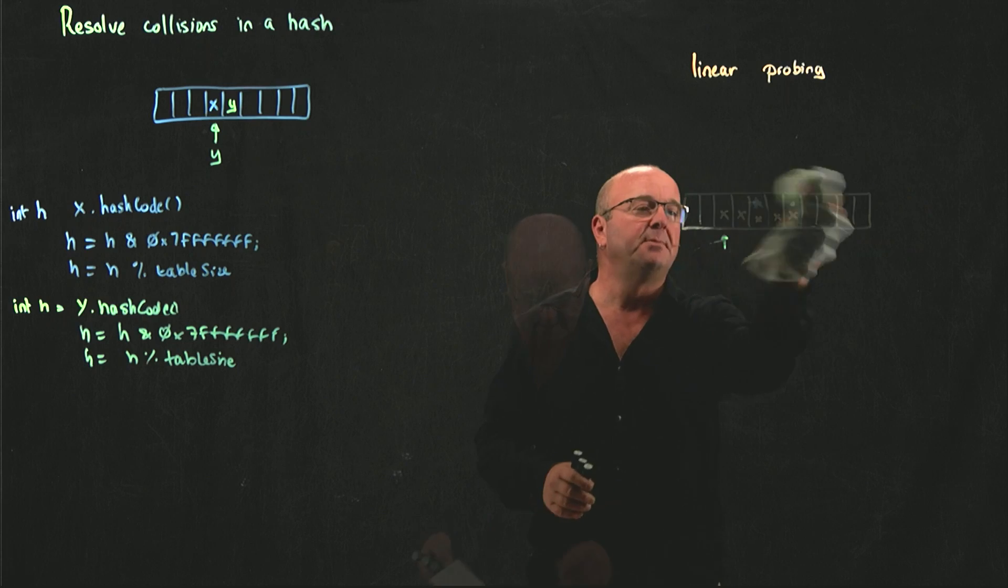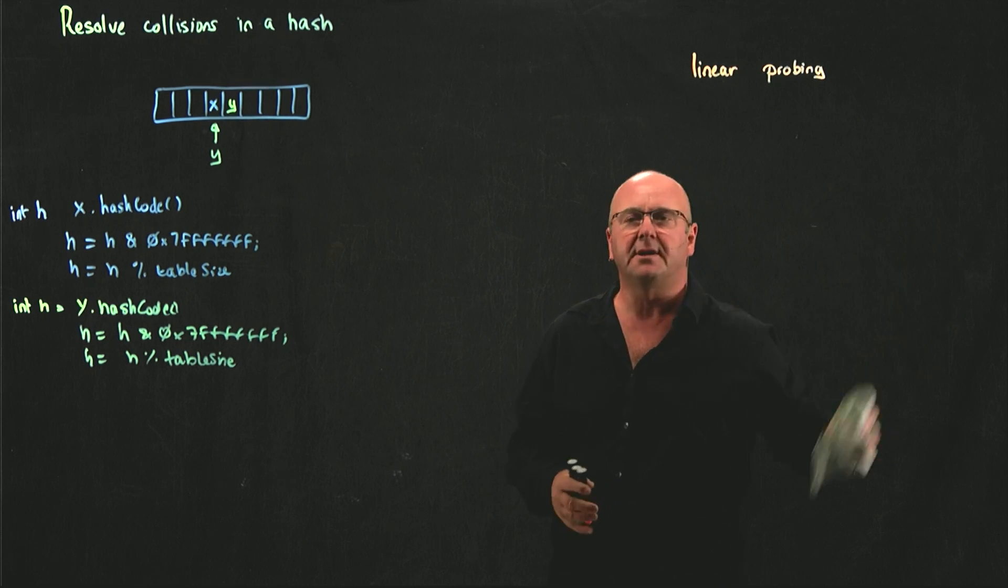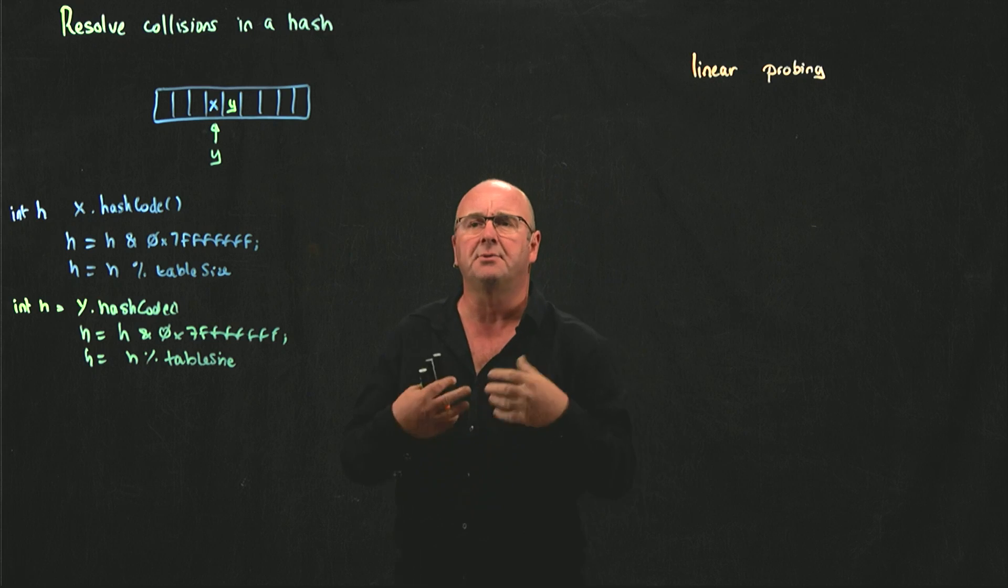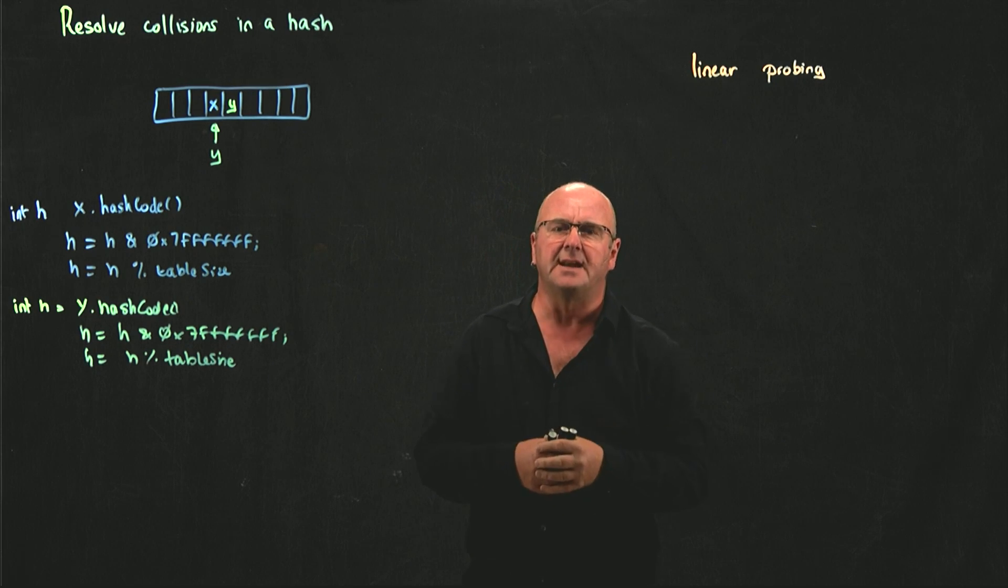So, the first approach is linear probing. That's okay, but actually what tends to happen with linear probing is you get clumps of related data, or unrelated data,